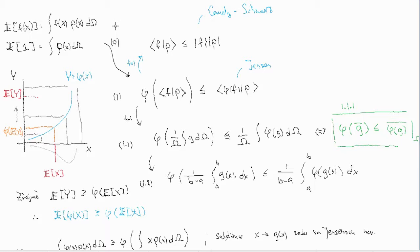Cauchy-Schwarz inequality says that if you have an integral of a product of two functions, this integral is less than the product of square roots of the integrals. This is a norm of this function, defined as the square root of the integral of the function with itself — so the square root of the integral of f squared, times the square root of the integral of rho squared. Rho I will be denoting as our density, probability density function, so its integral is 1.